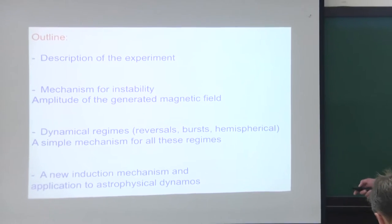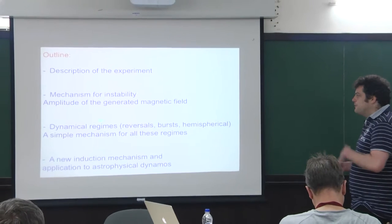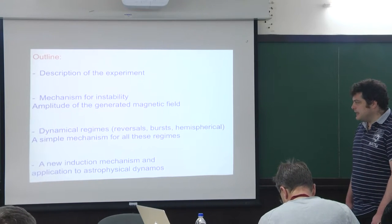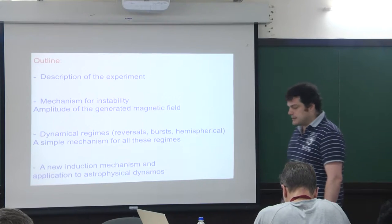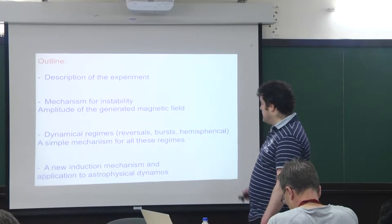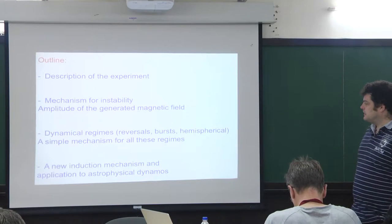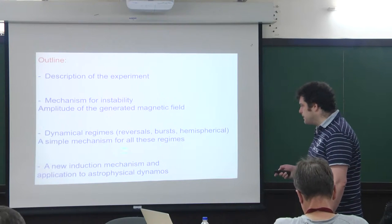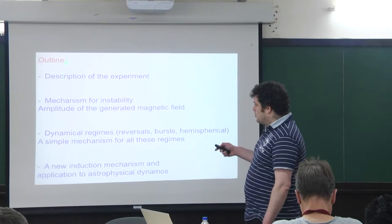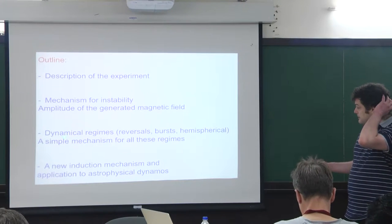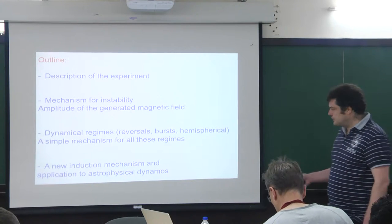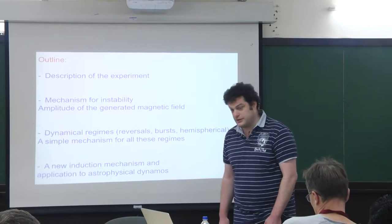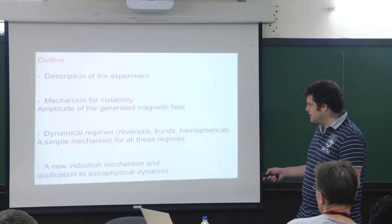I will discuss the instability and the mechanism of instability, then what happens above the onset of instability, and present results on the amplitude of the generated magnetic field. I'll show dynamical regimes including reversal of the generated magnetic field and other interesting behaviors, and explain how all these regimes can be understood using a simple mechanism. The last part will be new, discussing induction mechanisms and possible applications to astrophysical dynamos.